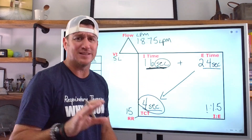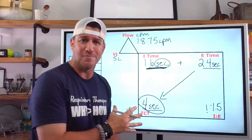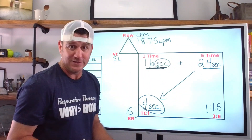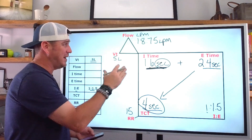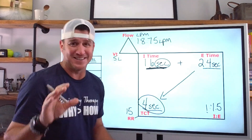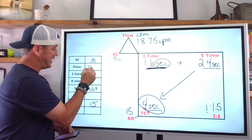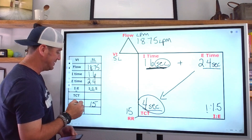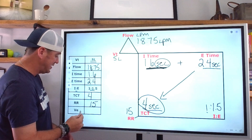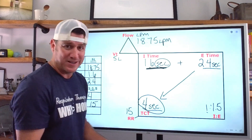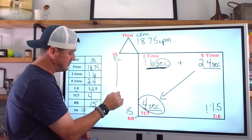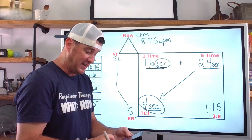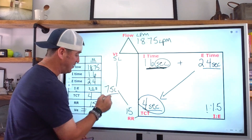We can now fill in the box: flow is 18.75, I-time is 1.6 seconds, E-time is 2.4 seconds, total cycle time is 4 seconds. That leaves us minute ventilation. We could have done this right off the bat because tidal volume times respiratory rate gives us minute ventilation. So: 15 times 0.5 equals 7.5 liters per minute.